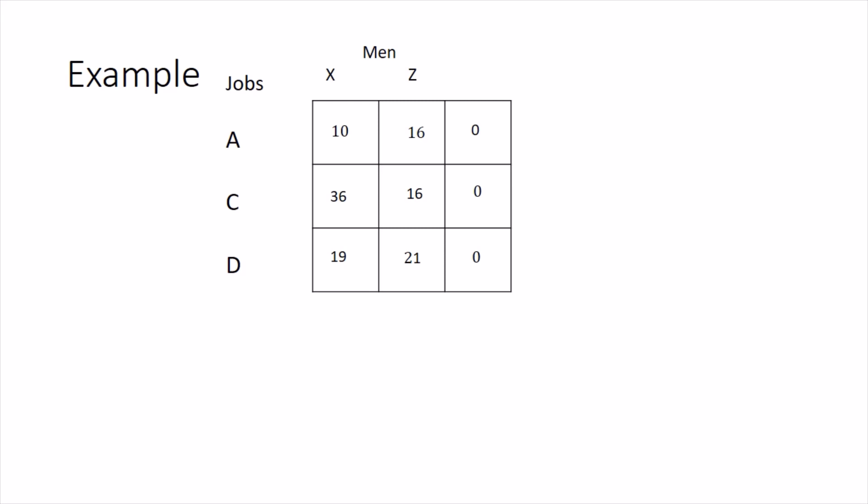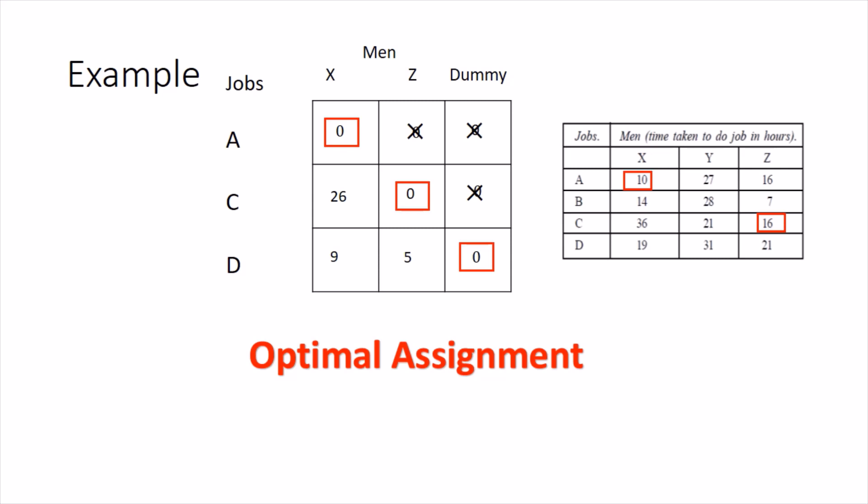After balancing, follow the Hungarian method procedure by finding the reduced matrix. The row minima are zero so nothing changes in the rows, but computing the column minima gives the reduced matrix. The third column represents the dummy employee. Applying the Hungarian method, the first assignment goes in the last row, and very easily we see this is the optimal assignment. Interpreting back: job A goes to X, B goes to Y, C goes to Z, and D remains unassigned since it goes to the dummy.